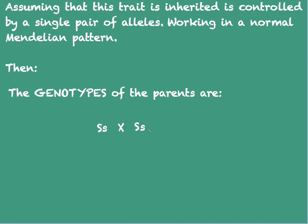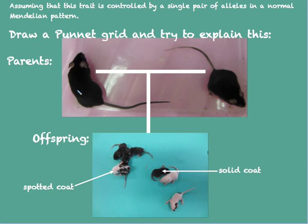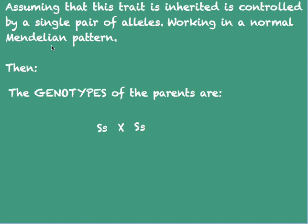At the same time, we note the phenotype of each parent is solid. If inheritance follows the normal Mendelian pattern, then each parent must carry one dominant allele, which accounts for their solid coat phenotype.